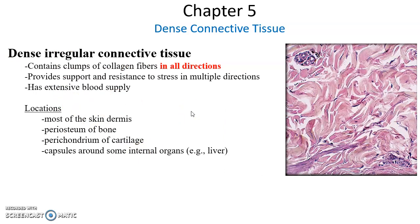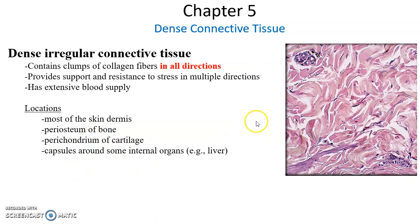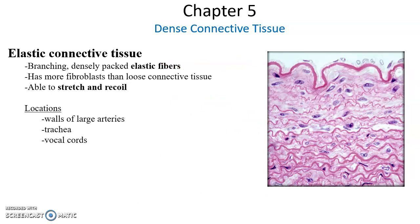Dense irregular connective tissue has large bundles of collagen fibers going in all kinds of directions. We see those collagen fibers being cut in all kinds of cross sections. Dense irregular connective tissue is able to resist stresses in many directions and provide good support. They have lots of blood vessels. They're found in the dermis of the skin, in the periosteum around bones, perichondrium around cartilage, and in the capsules that form an outer structure around many internal organs. Elastic connective tissue is made up of densely packed elastic fibers — these wavy lines — with fibroblasts. They're able to stretch and then recoil, returning to the original shape, found in large arteries, the trachea, and the vocal cords. And that's where we will stop for this part of the lecture.